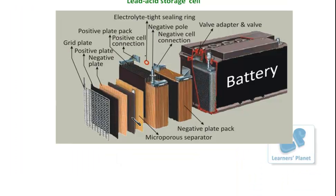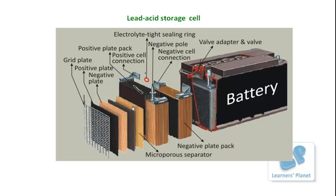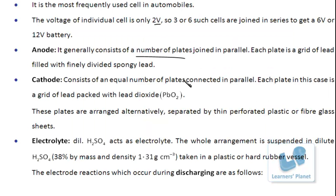As shown in the previous figure, these are stacks of positive plates and negative plates. Within the anode, there are a number of plates joined in parallel filled with spongy lead, whereas the cathode consists of a grid of lead filled with lead oxide, also joined in parallel. These plates are arranged alternately, separated by thin perforated plastic or fiberglass sheets between the anodes and the cathode.